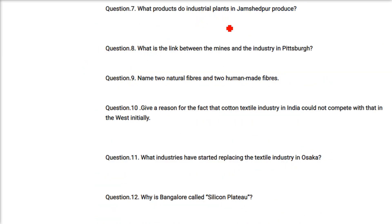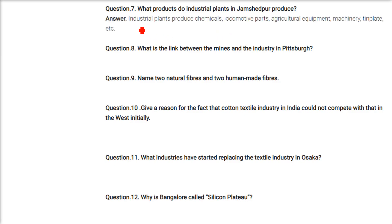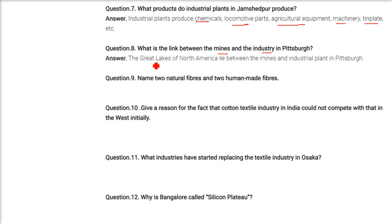What products do industrial plants in Jamshedpur produce? They produce chemicals, locomotive parts, agricultural equipment, machinery, and tin plate. What is the link between mines and industry in Pittsburgh? The Great Lakes of North America lie between the iron mines and the industrial plant in Pittsburgh.